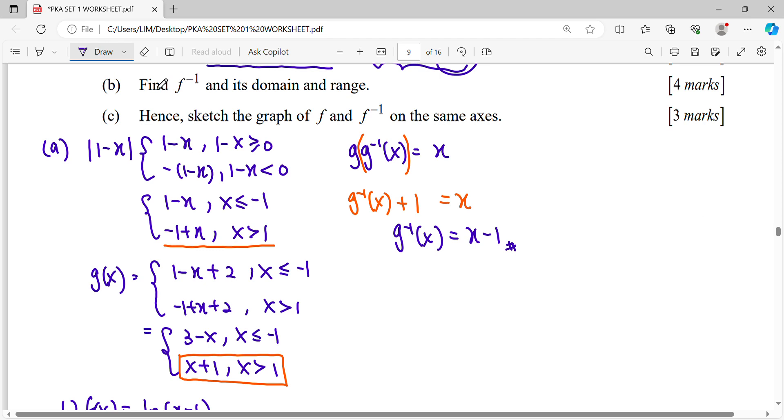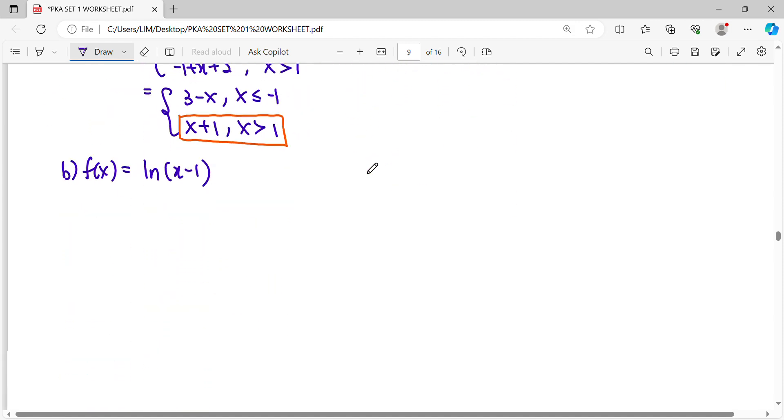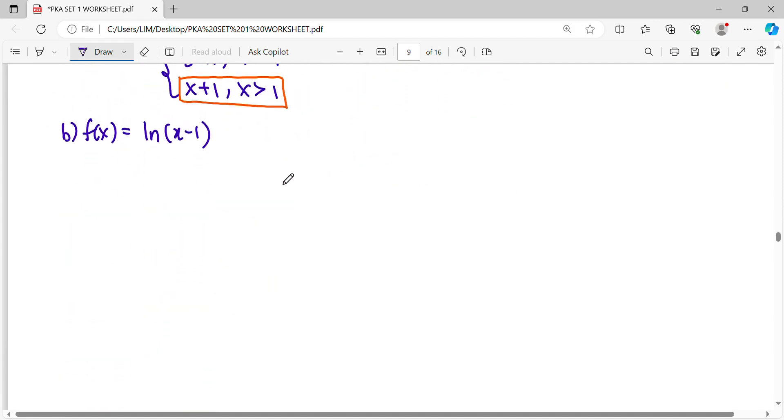So for part B, they said find the f inverse and state its domain and range. So our function f is equal to ln(x-1).